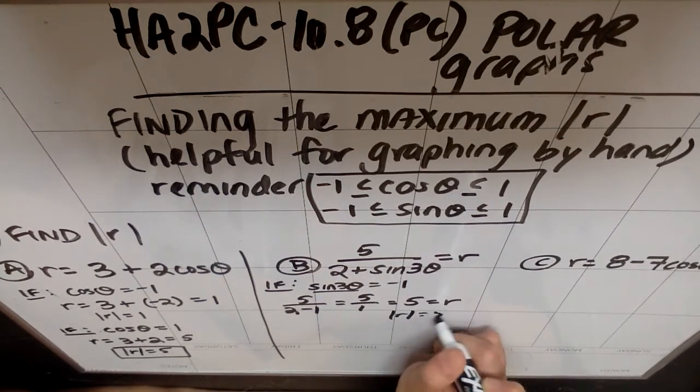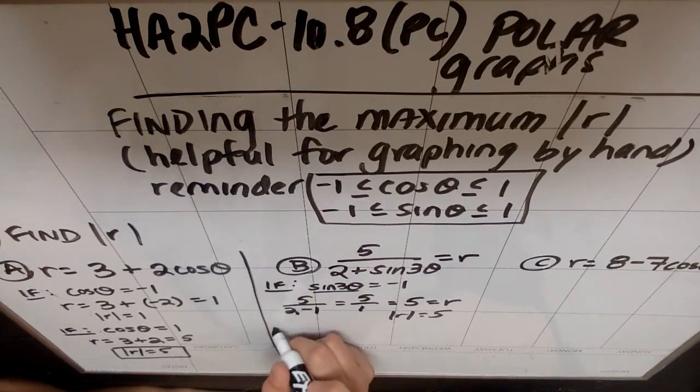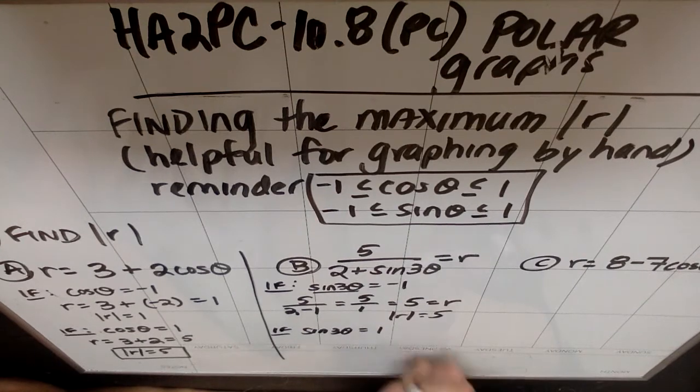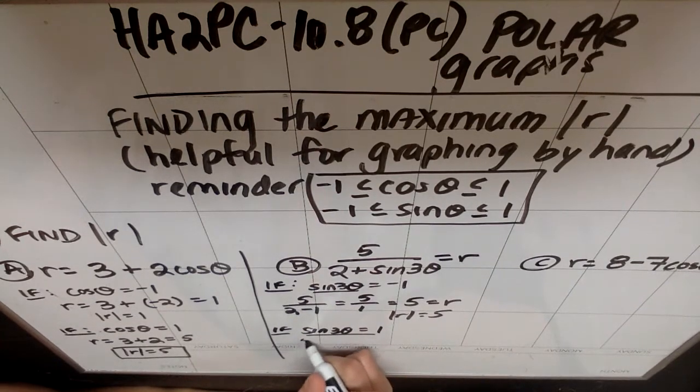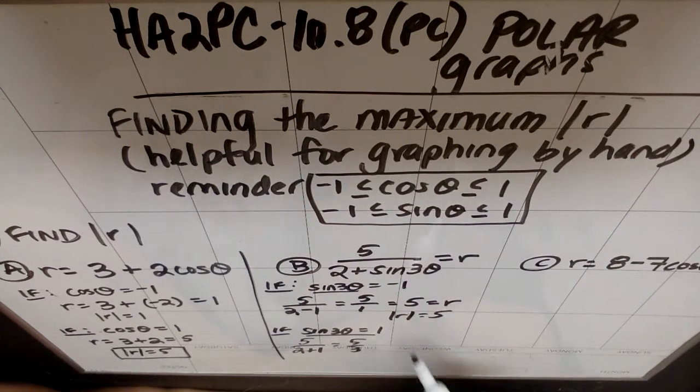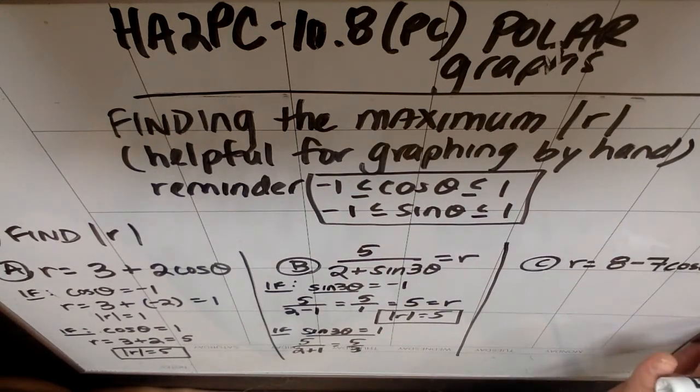If I picked that sine of 3 theta was a positive 1, which is the other possible largest option, I'd get 5 divided by 2 plus 1, which would be 5 thirds, which is smaller. So again, my largest possible absolute value of r is 5. It was an accident that they came out to be 5 both times.